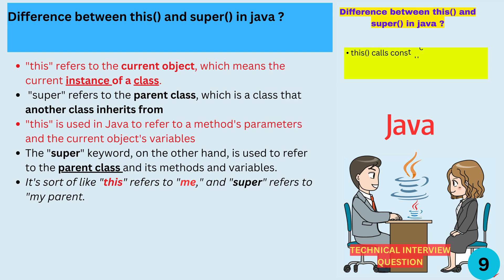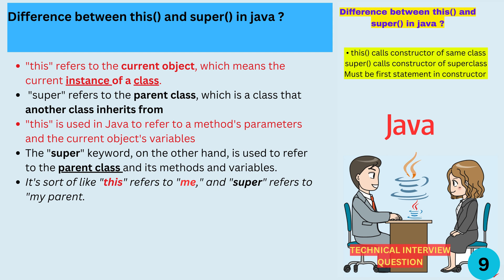The 'this' keyword is used in Java to refer to a method's parameters and the current object's variables. It's used when a method needs to refer to something in the current object rather than in the parent class. The 'super' keyword, on the other hand, is used to refer to the parent class and its methods and variables. So super and this are similar, but they refer to different things — this refers to me, and super refers to my parent.